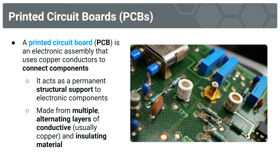In this photo reference on the right, you'd see the PCB — that's in green — and components are soldered to it. That is a much more permanent way to arrange components compared to a breadboard. This is made from alternating layers of conductive — usually copper — and insulating materials. We'll talk about this more later.